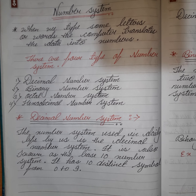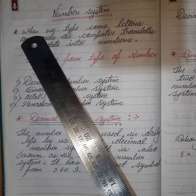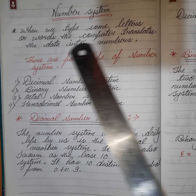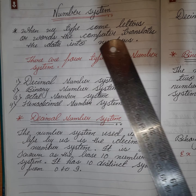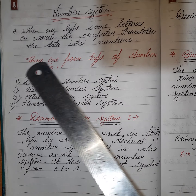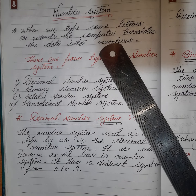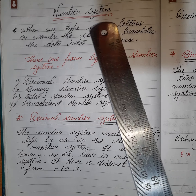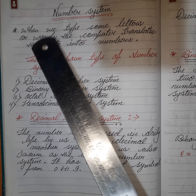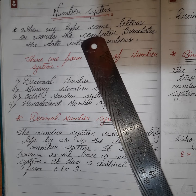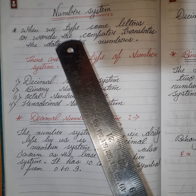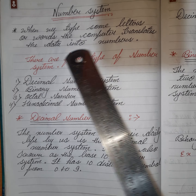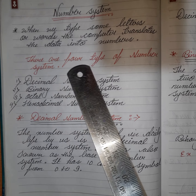What is number system? When we type some letters or words, the computer translates the data into numbers. That means when we type any letters or any words in a computer, it translates them into its own language — that's the number system.